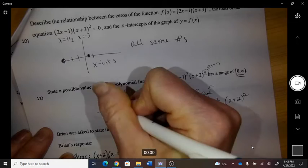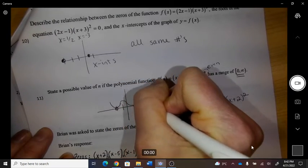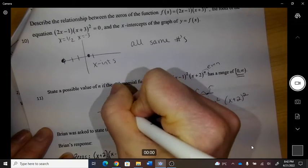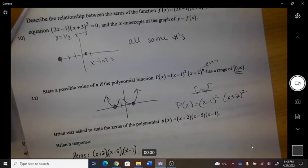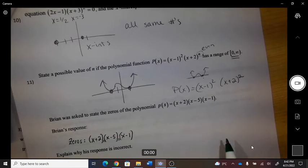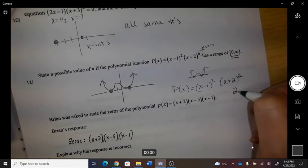put that as a 2. So p(x) equals (x-1)² times (x+2)², and then that would create bounce off of each one, and now my range goes from zero to infinity. So 2 equals n.